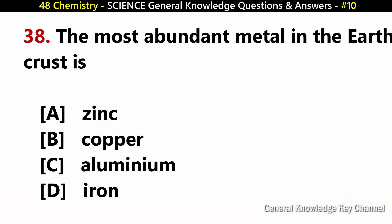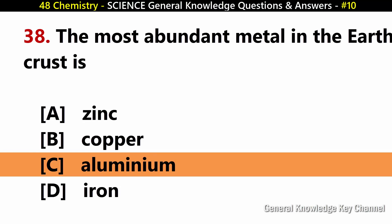The most abundant metal in the earth's crust is? Answer C: Aluminium.